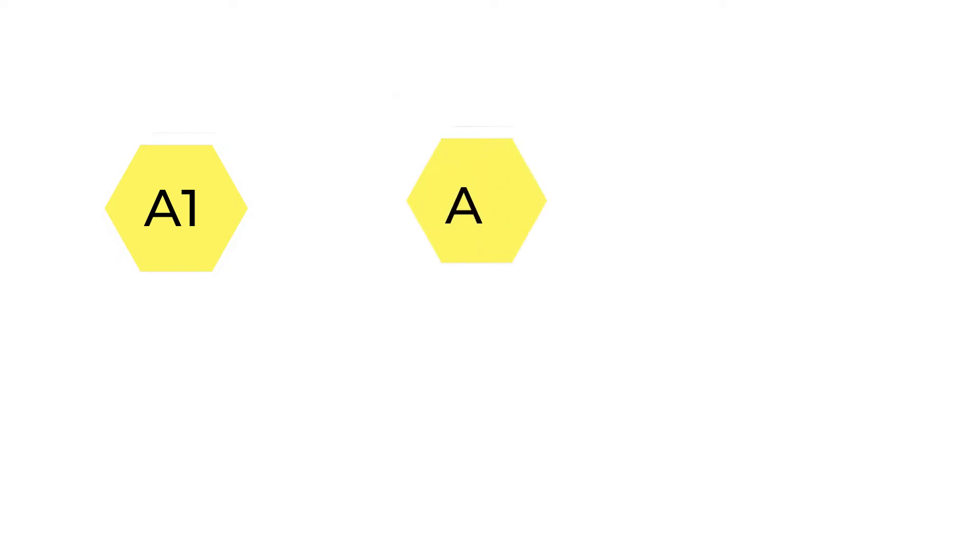There are three nodes between you and the dark web server. For each node, you share a unique symmetric key, and the message is encrypted by that key. Let's say A1 is the symmetric key for node 1, A2 is the symmetric key for node 2, and A3 is the symmetric key for node 3.